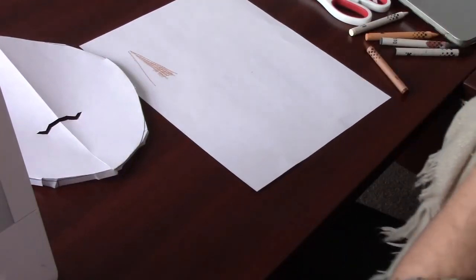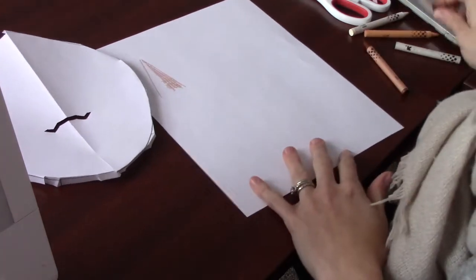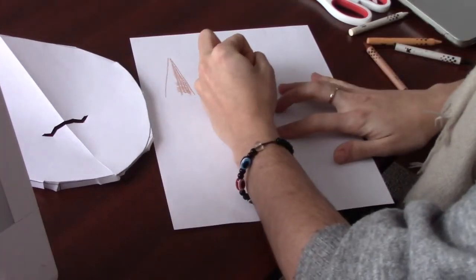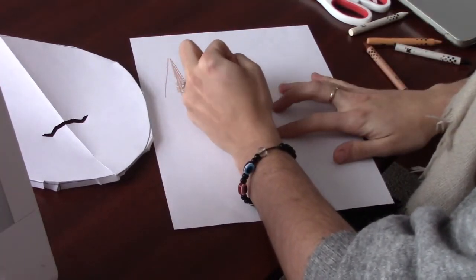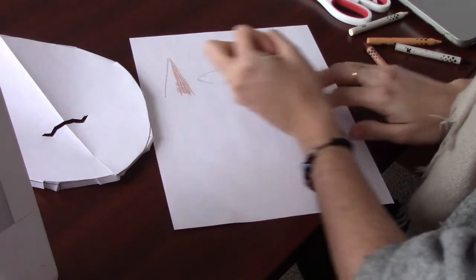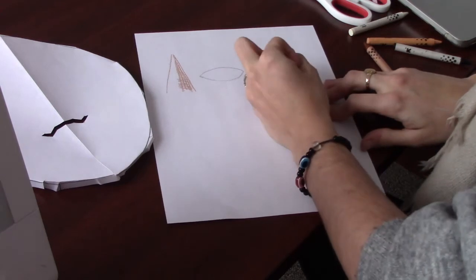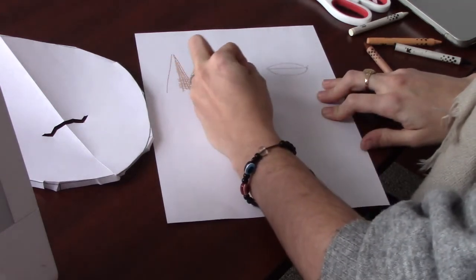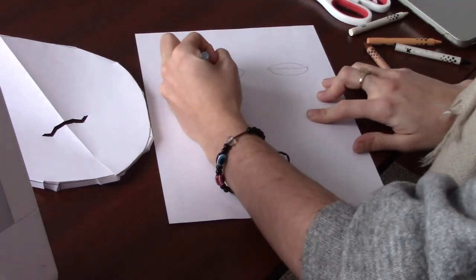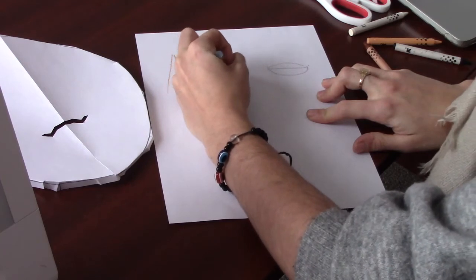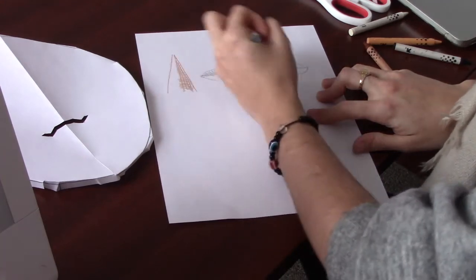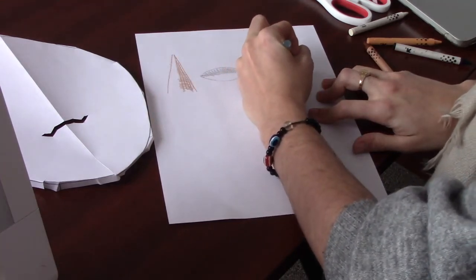So I'm also going to need some eyes. So I'm going to cut out some kind of pointed oval shapes. I think I'm going to give them some eyelids and color those in as I desire.